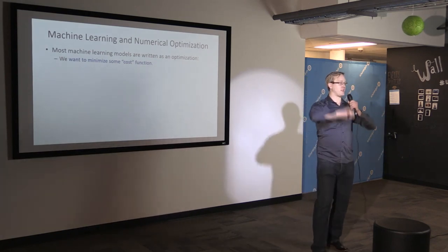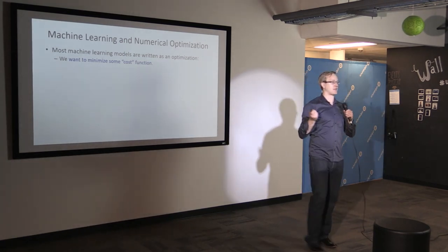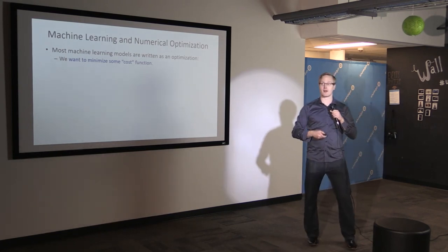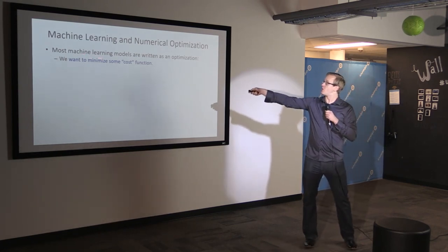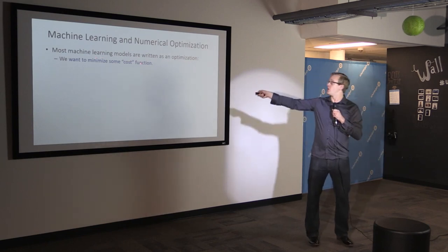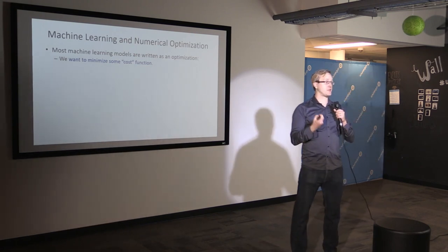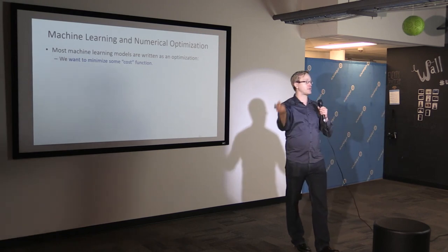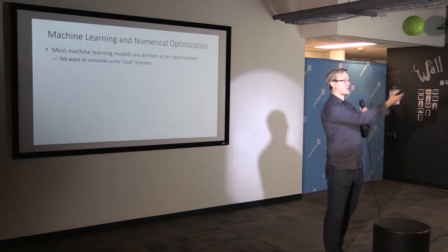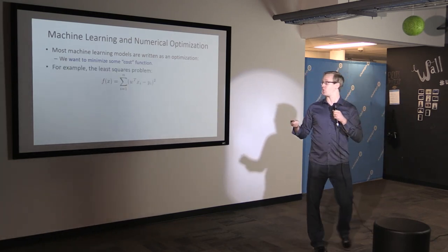Now for the more technical part: most machine learning methods are written as some sort of numerical optimization problem. You want to minimize some cost function that tells you how well your program is at getting from input to output. If the cost function is very high, you give it a picture of a cat and it says 'dog.' If the cost function is very low, it means you're doing well.